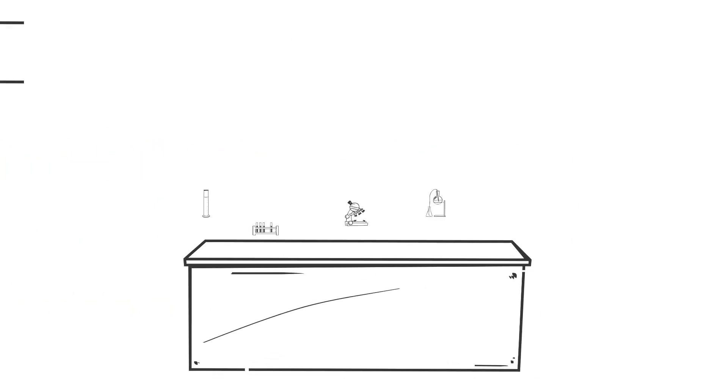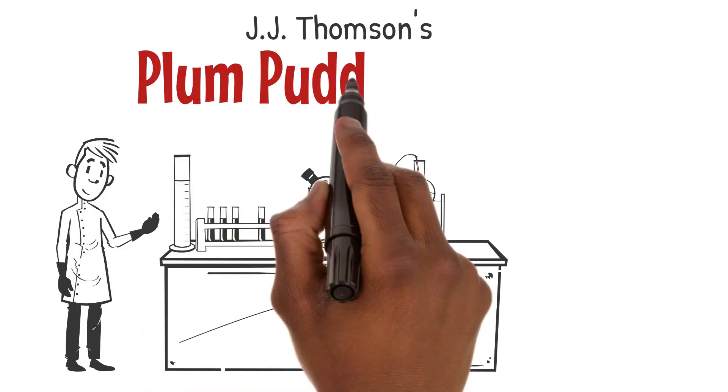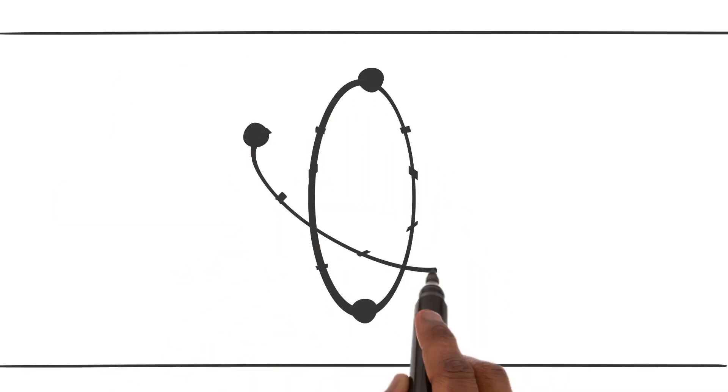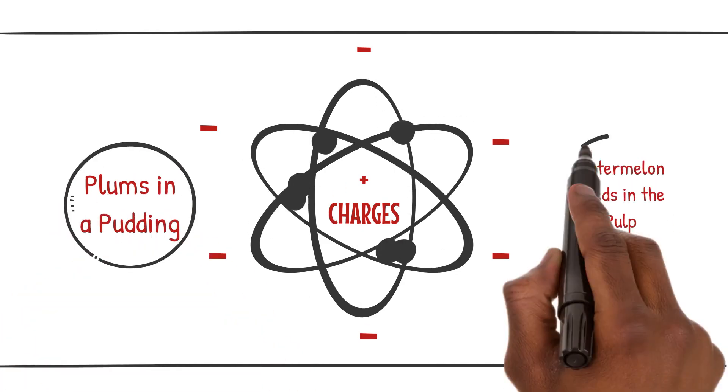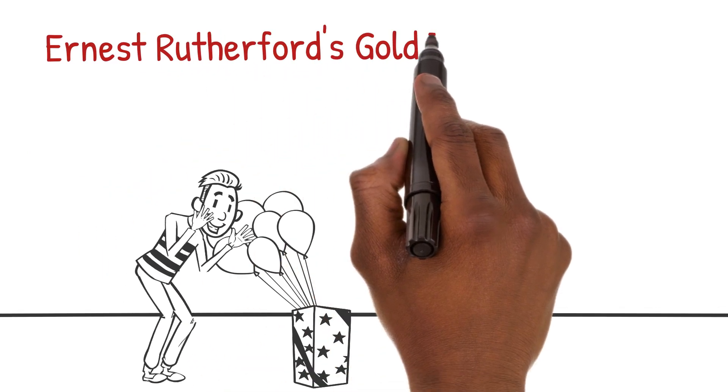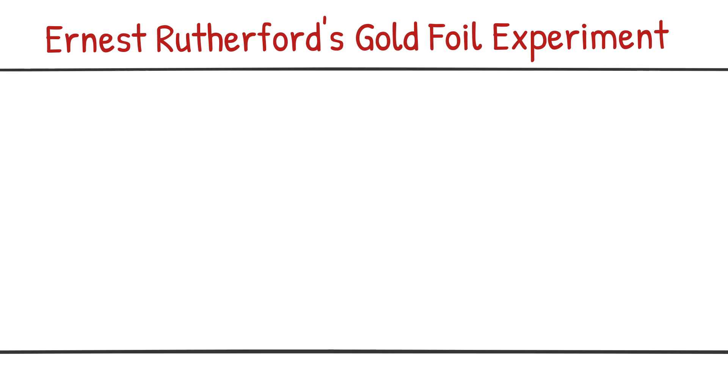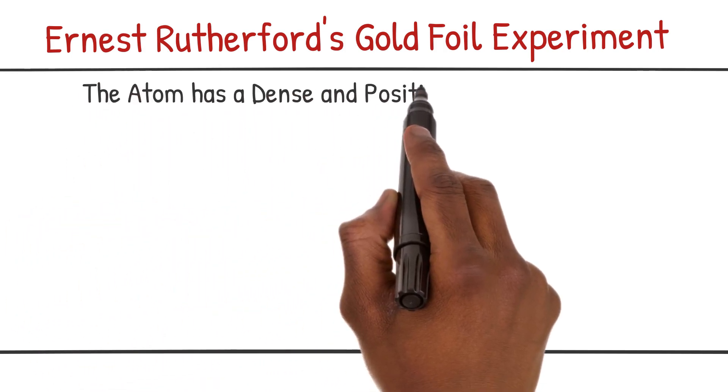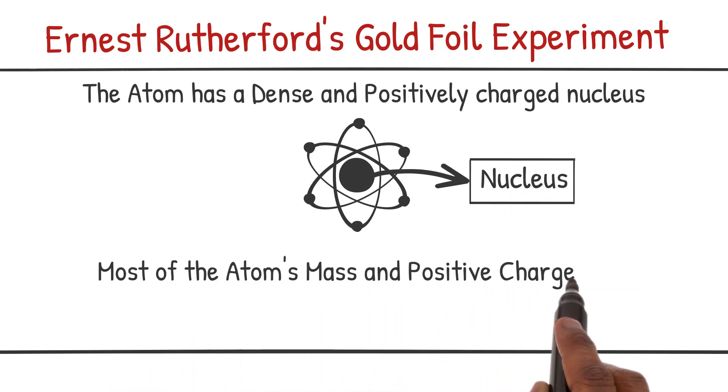Scientists proposed various models to understand the structure of atoms, starting with J.J. Thomson's plum pudding model. In Thomson's model, atoms were imagined as a positively charged substance with negatively charged electrons scattered throughout, like plums in a pudding or watermelon seeds in the pulp. However, Ernest Rutherford's gold foil experiment brought a surprising revelation. He discovered that the atom has a dense, positively charged nucleus, and most of the atom's mass and positive charge are concentrated there.